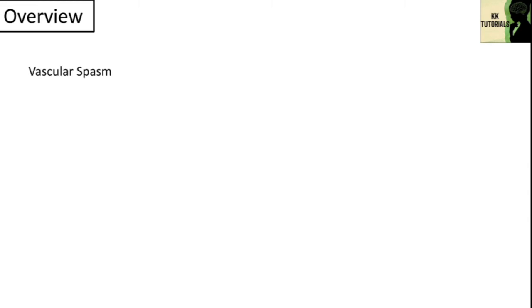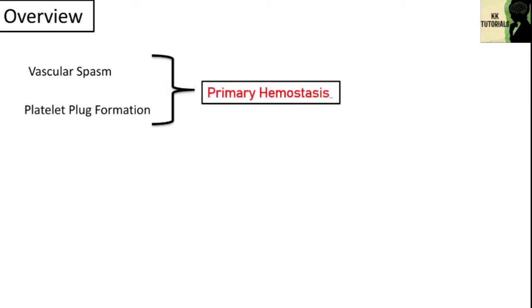In the first part, we discussed two processes: vascular spasm, where when injury occurs, vessel walls constrict causing reduced blood flow to the site of injury; and platelet plug formation, where platelets aggregate to the site of injury and stick together, acting as a plug. These two processes are categorized into primary hemostasis.